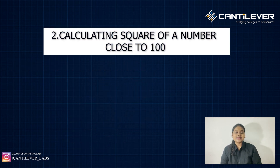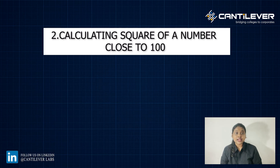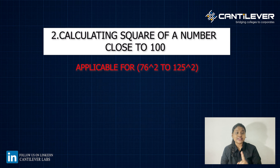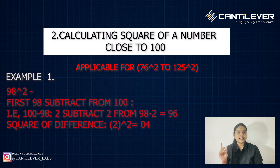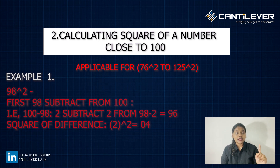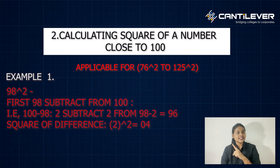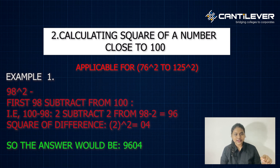Moving ahead, let's look at calculating the square of a number close to 100. This is strictly applicable only from 76² to 125². For example, 98². First subtract from 100: 100 minus 98 gives you 2. Now subtract 2 from 98, giving 96. The square of the difference, 2² equals 04. So the answer is 9604.